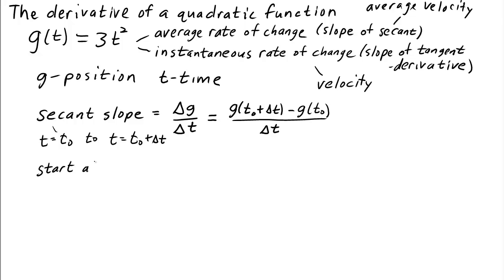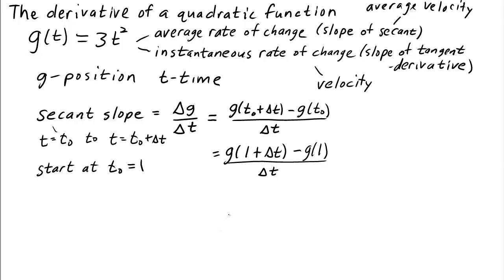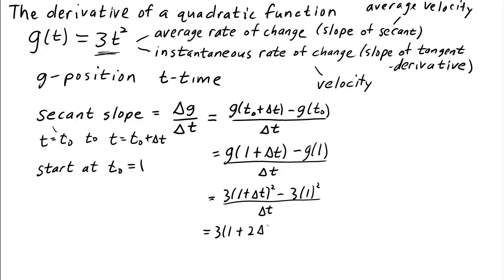Let's start at the point t-naught equals 1. Then the secant slope is g of (1 plus delta t) minus g of 1, over delta t. Now let's plug in what g is: g is 3 times t squared. So g of (1 plus delta t) is 3 times (1 plus delta t) squared. And we divide by delta t.